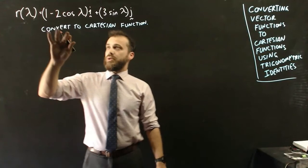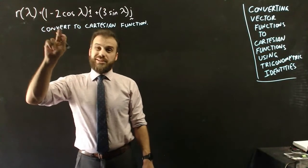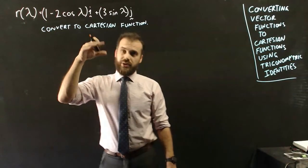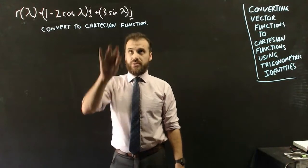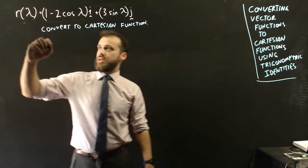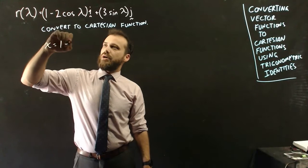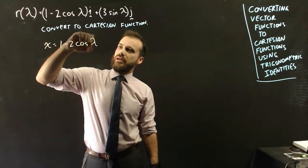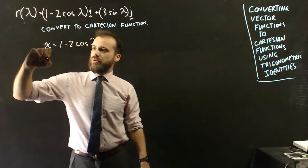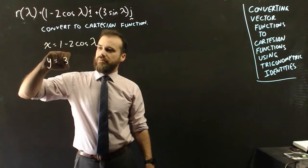So what can we say? Well, we know that this is going to be the x coordinate of our i coordinate, and we know that this is going to be our j. So we can say that x is equal to 1 minus 2 cos lambda, and we can say that y is equal to 3 sin lambda.